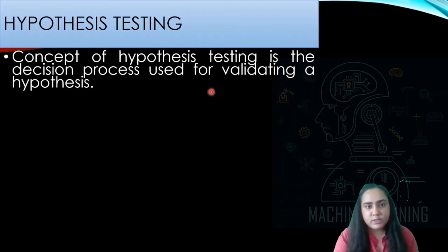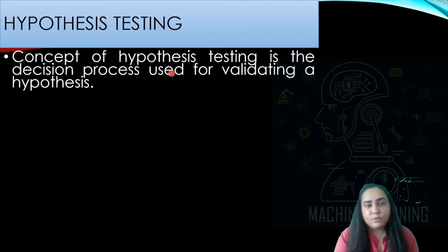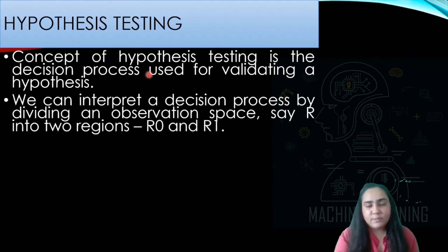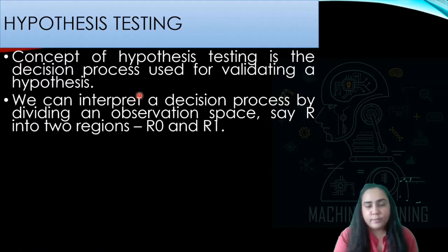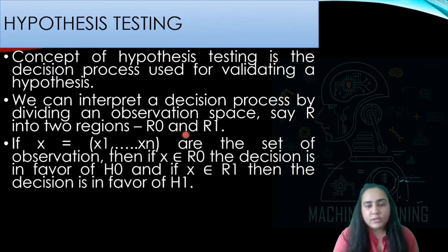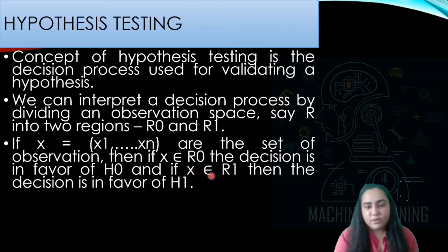The concept of hypothesis testing is the decision process used for validating a hypothesis. You can interpret a decision process by dividing an observation space into two regions: region R0 and region R1. If all the values of x — your set of observations — belong to R0, then the decision is in favor of H0, the null hypothesis. But if x belongs to R1, then the decision is in favor of H1, the alternative hypothesis.